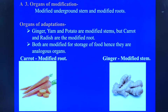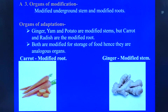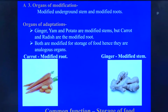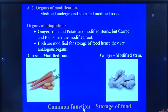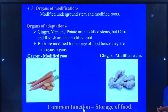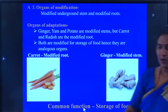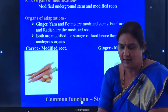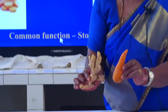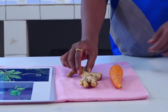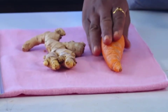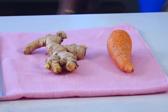Next, analogous organs — example three. The organs of modification are underground stems and underground modified roots. Ginger, yam, and potato are modified stems, but carrot and radish are modified roots. Both are modified for the storage of food; hence they are analogous, because their origins differ but functionally both are the same. See — ginger with its rhizome and carrot with its conical root.